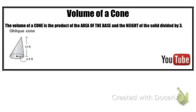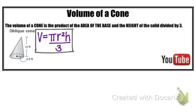Okay, our next formula is the volume of a cone formula. The volume of a cone is the product of the area of the base and the height of the solid divided by 3. So area of the base, well the base of our cone is a circle. So you can imagine that our volume formula will have the area of a circle in it, which is the pi r squared times the height and then divided by 3. So your volume formula is pi r squared h divided by 3.